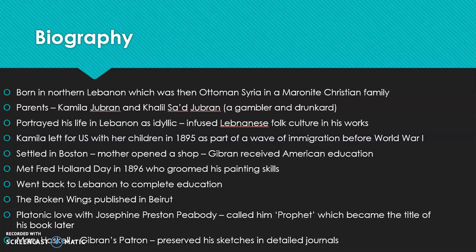His mother was Kamila Gibran and his father was Khalil Saeed Gibran, who was a gambler and a drunkard. Gibran portrayed his life in Lebanon as idyllic. He always looked at Lebanon as a place of idyllic beauty and infused Lebanese folk culture in his works. Even after shifting to the US, you come across the influence of Lebanon and the beauty of nature in his writings.